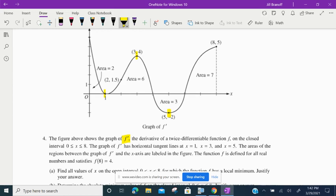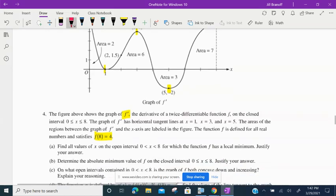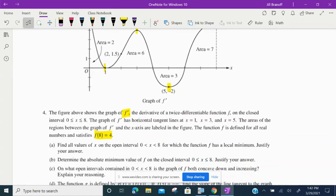The function f is defined for all real numbers and satisfies f of 8 is equal to 4. Letter A, find all values of x on the open interval from 0 to 8 for which the function has a local minimum. Justify your answer.